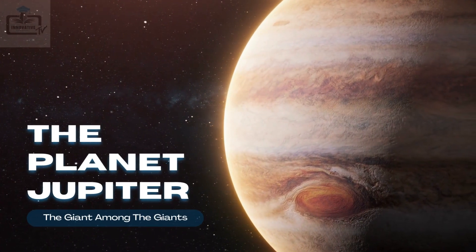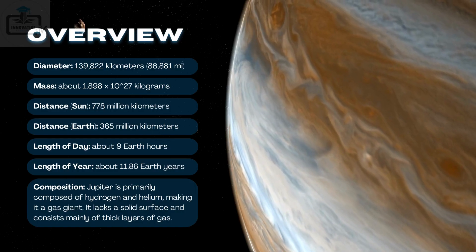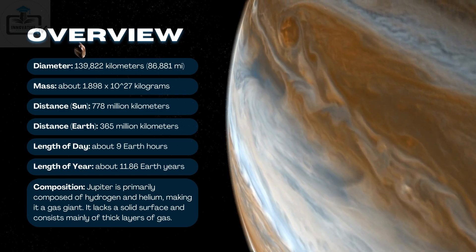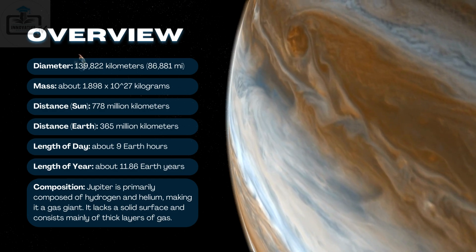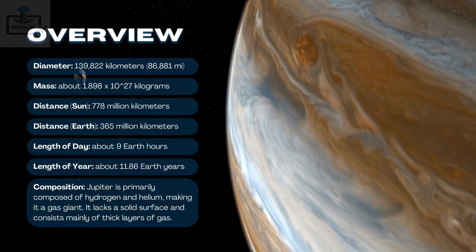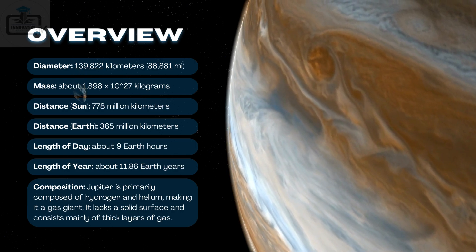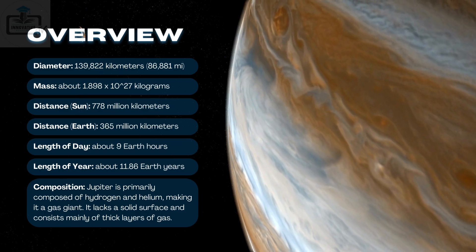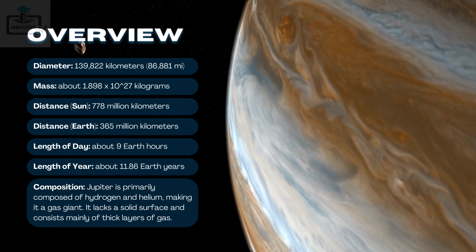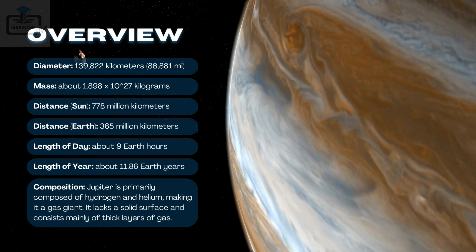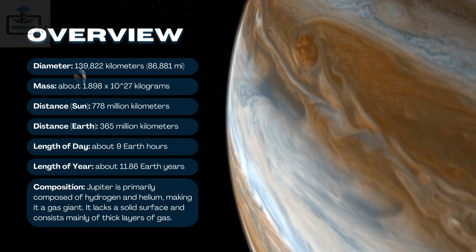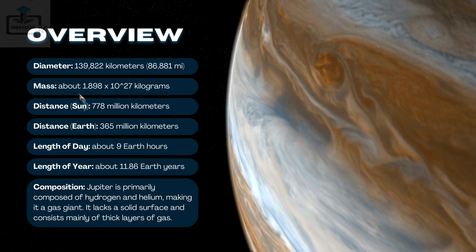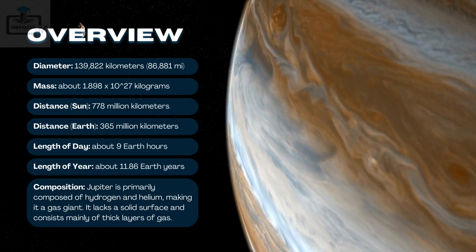5. The planet Jupiter, the giant among the giants. Overview: Diameter — 139,822 kilometers (86,881 miles). Mass — about 1.898 × 10^27 kilograms. Distance from Sun — 778 million kilometers. Distance from Earth — 365 million kilometers. Length of day — about 9 Earth hours. Length of year — about 11.86 Earth years. Composition: Jupiter is primarily composed of hydrogen and helium, making it a gas giant. It lacks a solid surface and consists mainly of thick layers of gas.